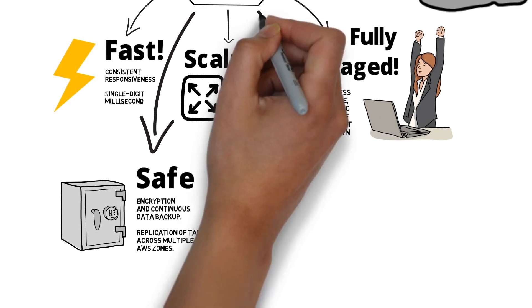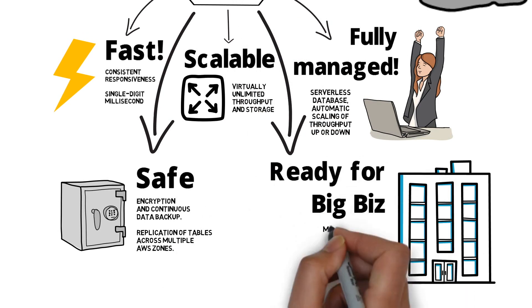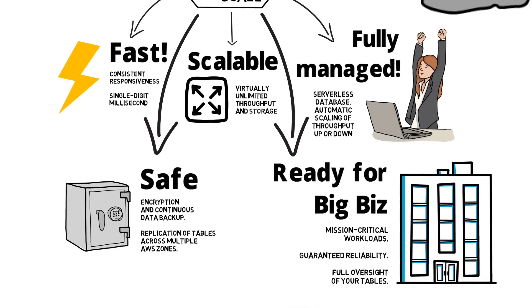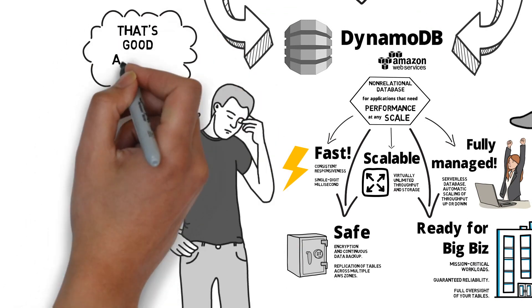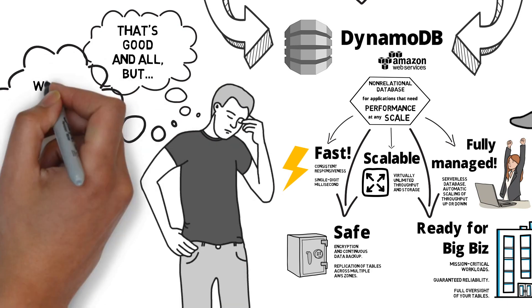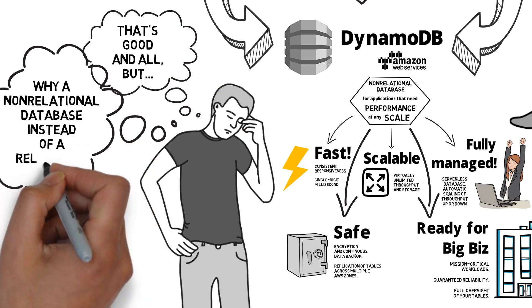It also has high availability with replications of tables across multiple AWS regions. What about big business? Yes, it's ready for big business with mission-critical workloads, guaranteed reliability, and full oversight of your tables. Let's talk about the differences between a non-relational database and a relational one, and where we use each.